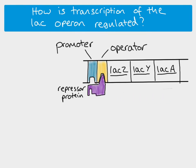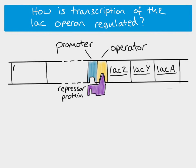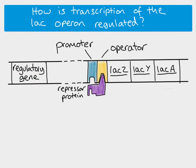If the repressor protein is blocking the promoter binding region, you can see that transcription cannot happen. If we have a repressor protein, there must be a gene to code for it — that's what our regulatory gene does. This regulatory gene codes for the repressor protein, and as seen previously, this regulatory gene is some distance away from the structural genes, so it is not part of the operon itself.